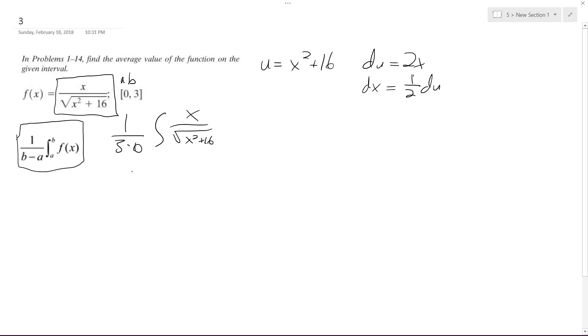So ultimately what I'm integrating is u raised to the negative 1 half, because that's what's on the bottom here. So when I integrate that, I get u to the negative 1 half plus 1 over negative 1 half plus 1. So I end up with u raised to the 1 half over 1 half, which gives me 2. So I end up with 2u raised to the 1 half.